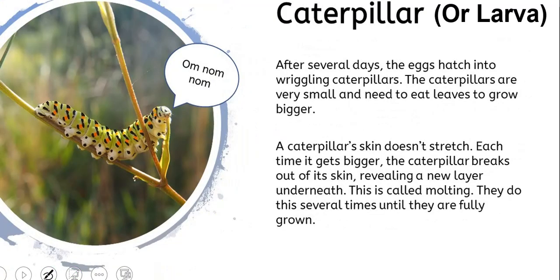The second stage, also called the larva stage, takes only a few days — the eggs hatch into caterpillars. The caterpillars are very small and they need to eat lots of leaves so they can grow very big.